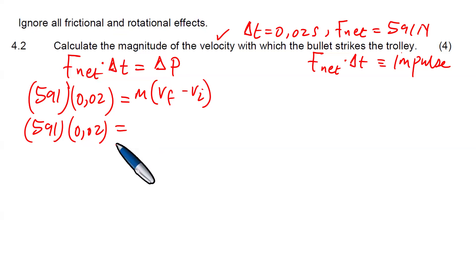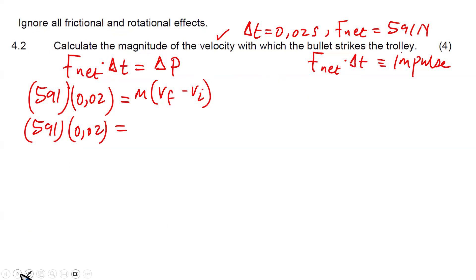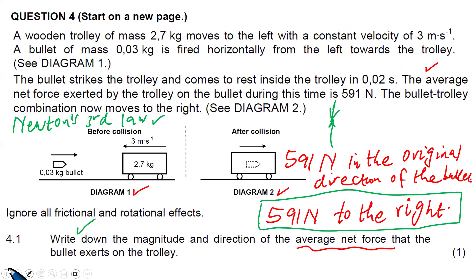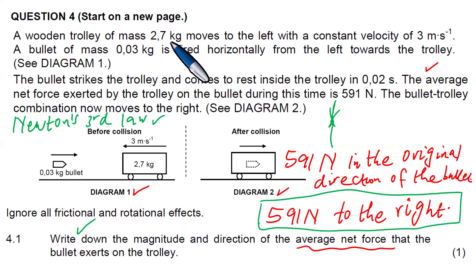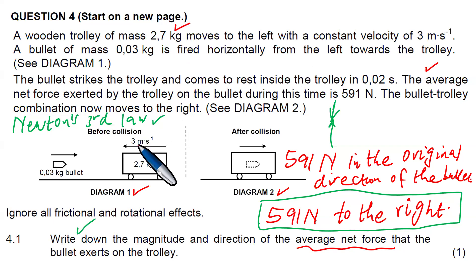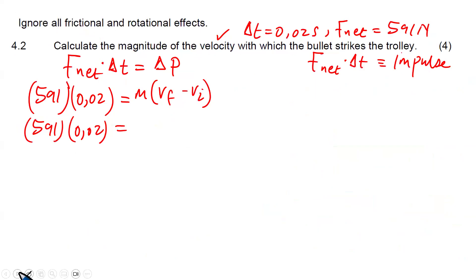We want to calculate the magnitude of the velocity with which the bullet strikes the trolley. The mass of the bullet is 0.03 kilograms. The wooden trolley has a mass of 2.7 kilograms and was moving with a constant velocity of 3 m/s to the left. We will consider what is happening with the trolley and find the final velocity.